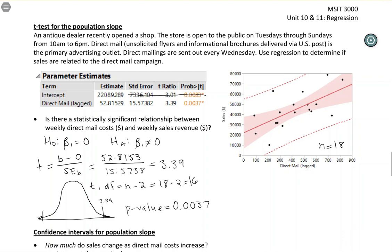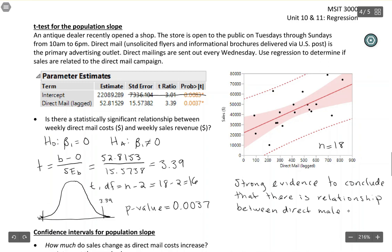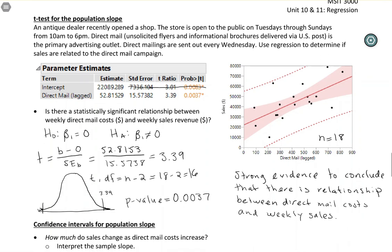Okay. So my p-value is 0.0037. Okay. So this is a small p-value. So just like you saw on test two, when your p-value is small, that means that you have strong evidence. So we would always say strong evidence to conclude whatever our alternative hypothesis is. So in this case, that would be strong evidence to conclude that there is a relationship. Remember, if the slope is not equal to zero, that means that there is a relationship between direct mail costs and weekly sales. There is a relationship between direct mail costs and weekly sales.